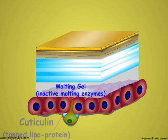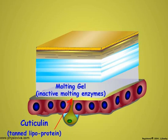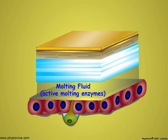A new outer epicuticular layer of cuticulin is secreted. This new cuticulin layer protects the epidermal cells and newly forming cuticle from digestion by the enzymes in the molting gel, which is then activated and becomes a fluid. The chitinase and protease enzymes of the molting fluid begin to digest the old endocuticle.